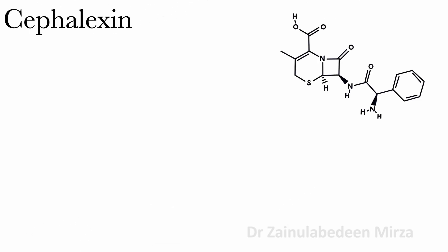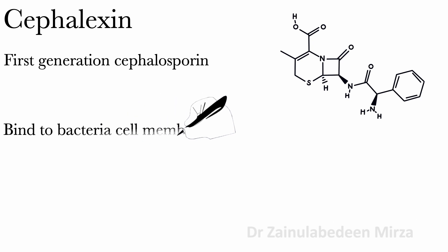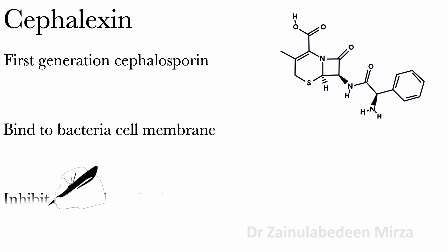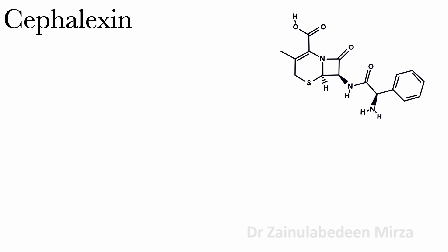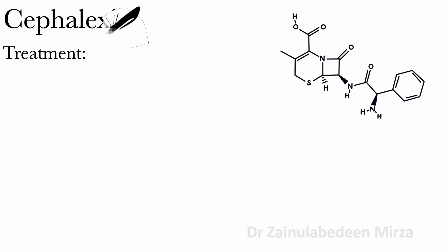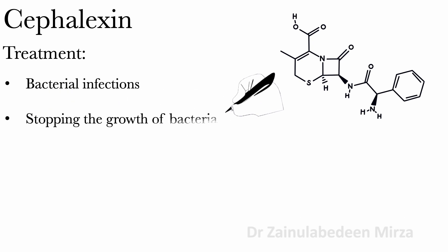Sivalexin is a first-generation Sivalexin that binds to bacterial cell membranes and inhibits cell wall synthesis. Sivalexin is bactericidal. It is used to treat a wide variety of bacterial infections and works by stopping the growth of bacteria.